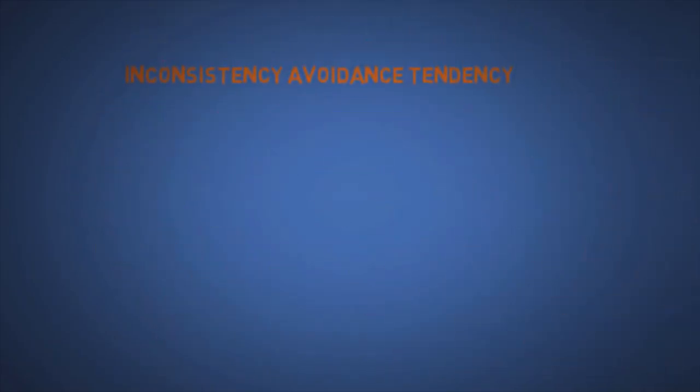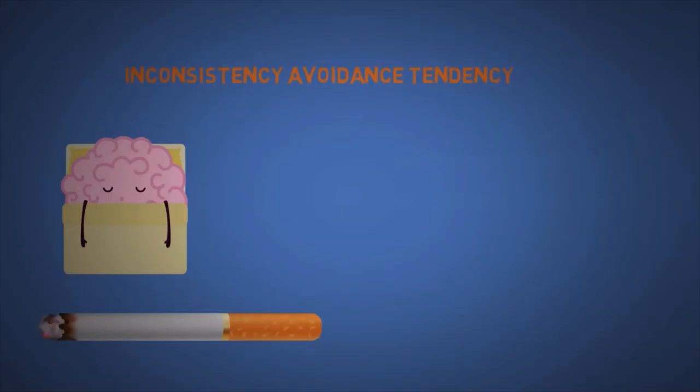The fifth is inconsistency avoidance tendency. Our brain conserves programming space by being reluctant to change. It's why eliminating bad habits can be difficult. The foot in the door technique is a great example of how people like to stay consistent. For example, can I borrow the car to go to school? Followed by, can I borrow the car for the weekend? The idea is to get people to agree to a small task or request first, then they'll be more likely to agree to a bigger one.